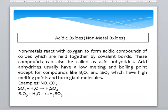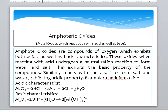Acidic Oxide or Non-Metal Oxide: non-metals react with Oxygen to form acidic compounds, which are held together by covalent bonds. These compounds can also be called acid anhydrides. Acid anhydrides usually have low melting and boiling points, except for compounds like Boron Oxide and Silicon Dioxide, which have high melting points. Examples include Nitrogen Monoxide, Carbon Dioxide, Sulphur Trioxide, Boric Acid, and Sulphuric Acid. For example, Nitrogen Oxide with water forms Nitric Acid, and Carbon Dioxide with water forms Carbonic Acid.